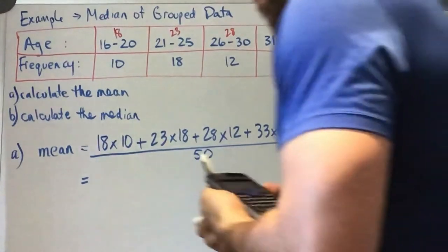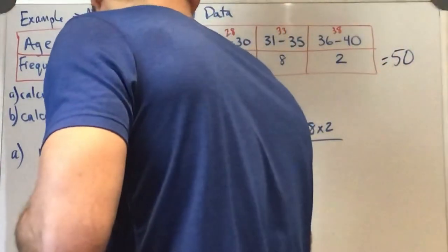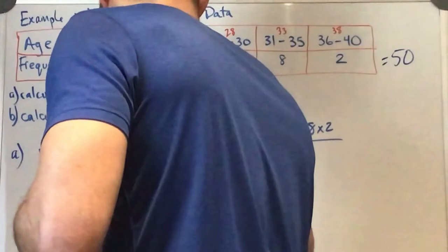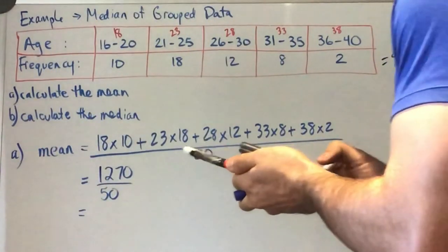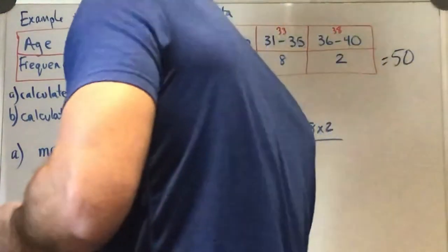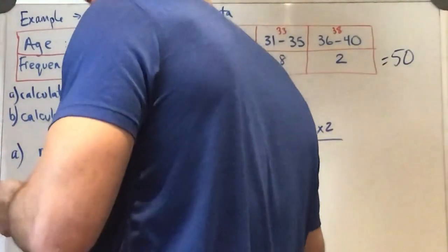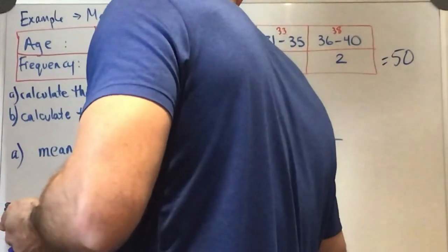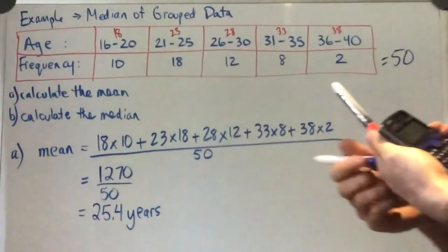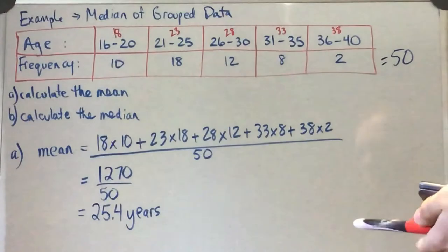Okay, so here I got 1270 over 50. Okay, so our mean is going to be 25.4 years.